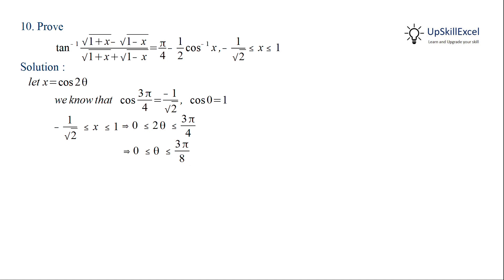From the assumption x equal to cos 2 theta, we can find 1 plus x which equals 1 plus cos 2 theta, equal to 2 cos square theta. Similarly, 1 minus x equals 1 minus cos 2 theta, which equals 2 sin square theta.